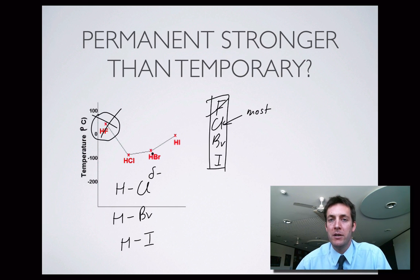A permanent dipole, because of the fact it's permanent, should lead to stronger attractions than a temporary one in general, everything else being equal. But we can see here that if you have lots and lots of electrons, your temporary dipole can actually end up outweighing your permanent one.